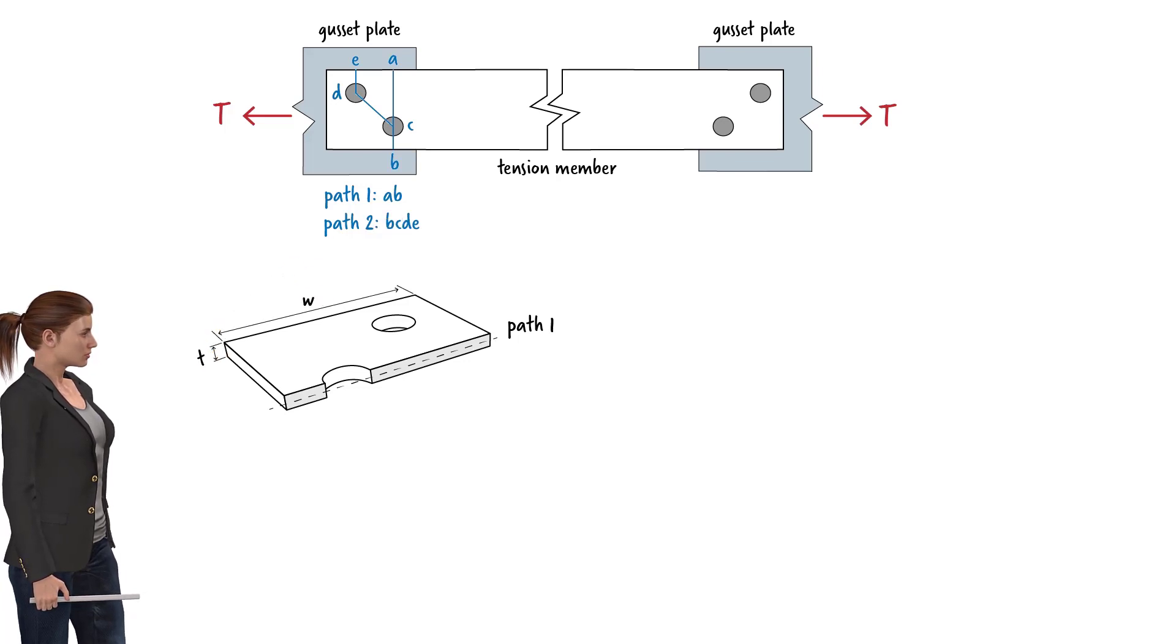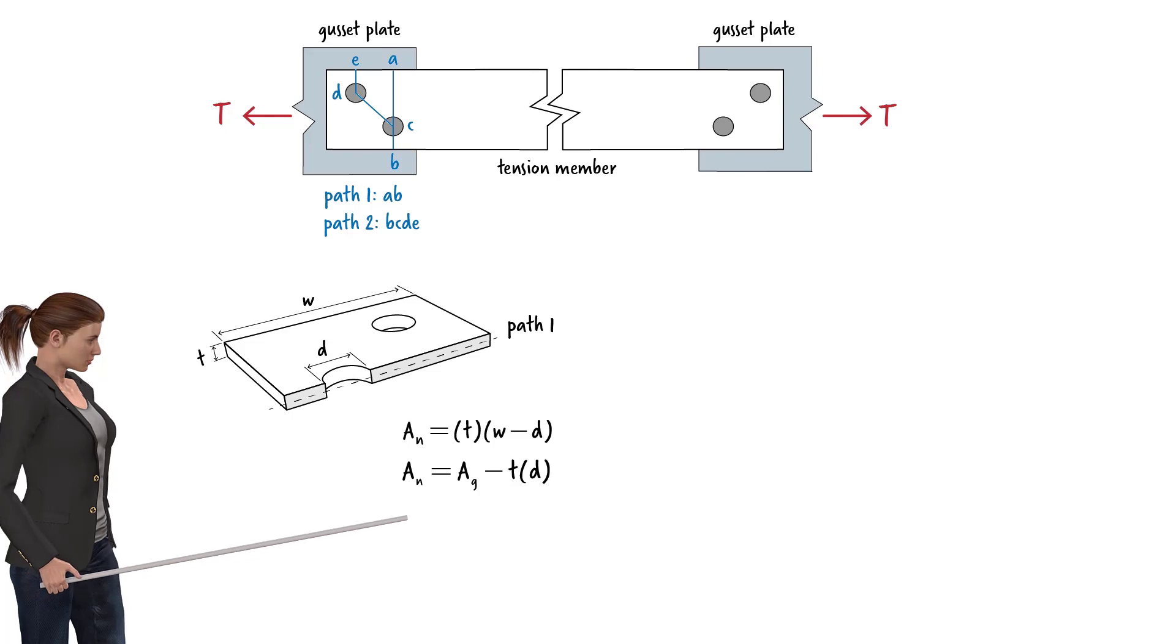...the net area of the cross section can be written as... Alternatively, we can express An as... where Ag is the gross area of the cross section.